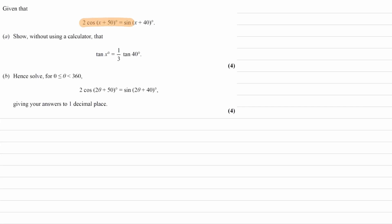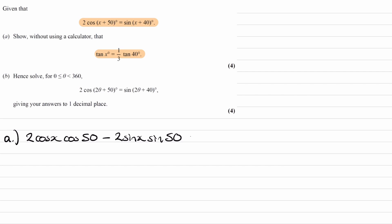Given that 2cos(x + 50) is equal to sin(x + 40), show without using a calculator that tan x is equal to a third tan 40. So let's use the addition formula with the equation that we have. The left-hand side becomes 2cos(x)cos(50) minus 2sin(x)sin(50). The right-hand side is sin(x)cos(40) plus cos(x)sin(40).